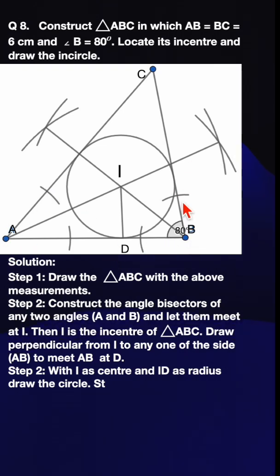Similarly, construct for angle B. Point of intersection of both the angle bisectors is I, the incenter. Drop a perpendicular, with this as the radius draw the incircle.